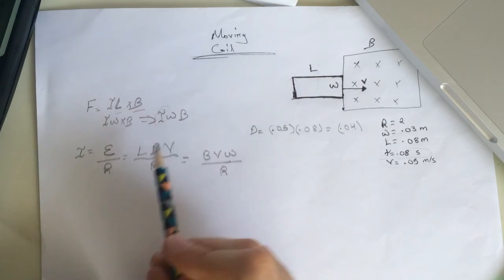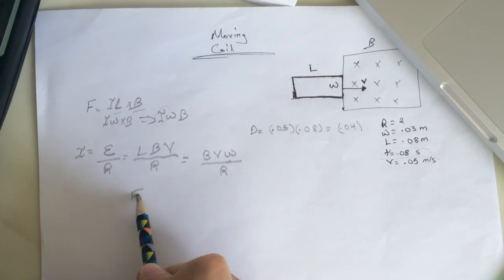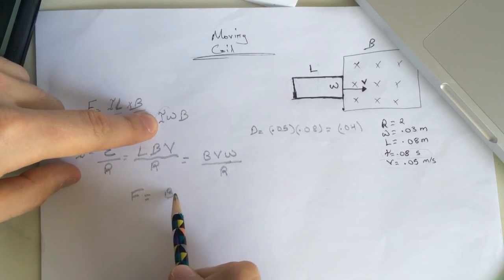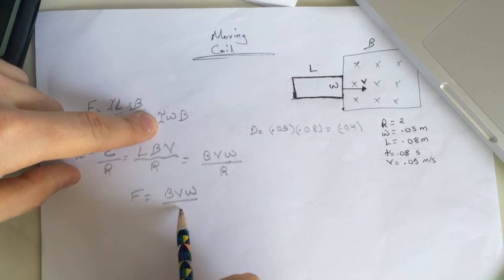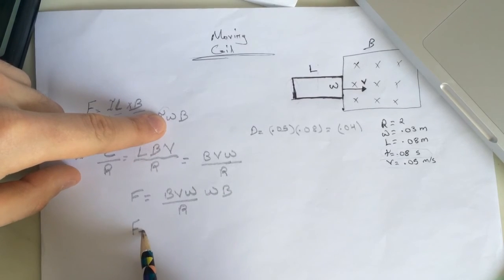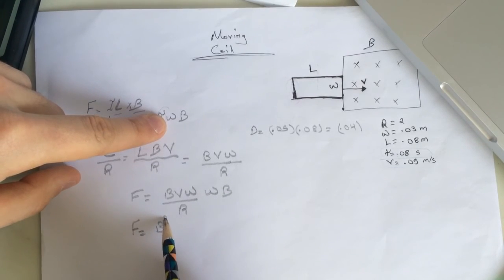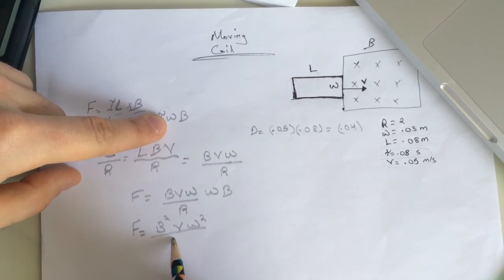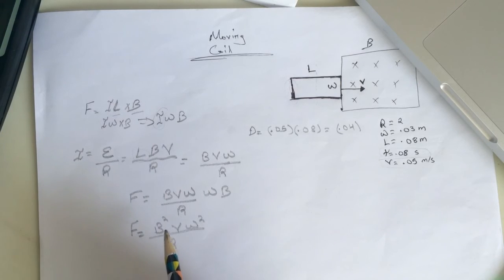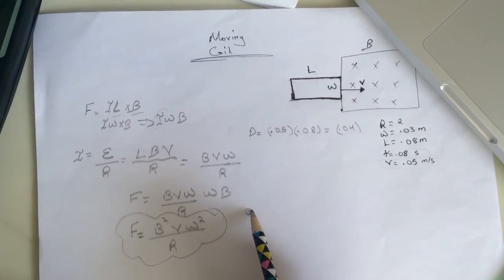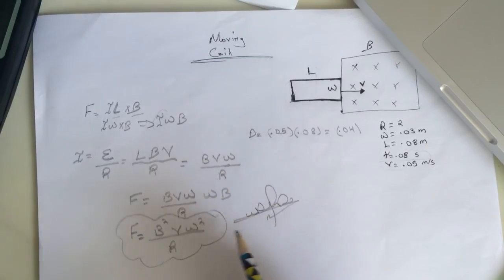Substituting into the force equation: F equals I times W times B, which is (B V W / R) times W times B. So the final force is B squared times W squared times V over R. I hope this helped and good luck!